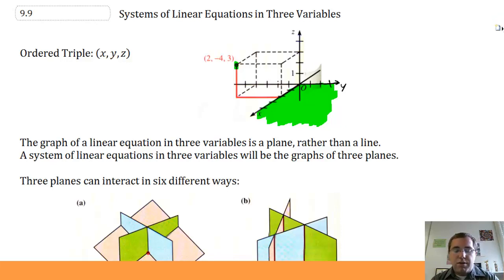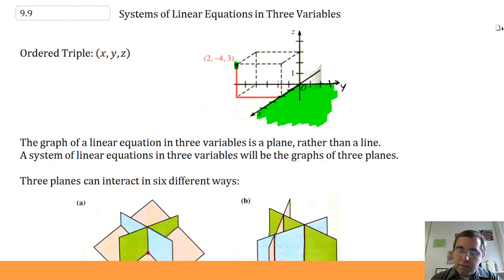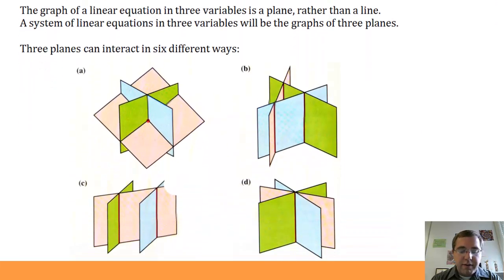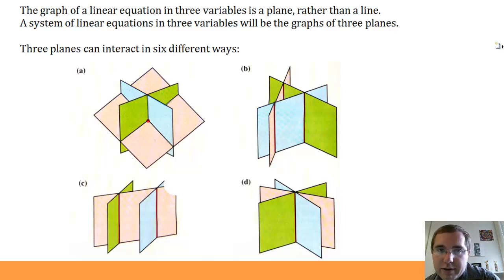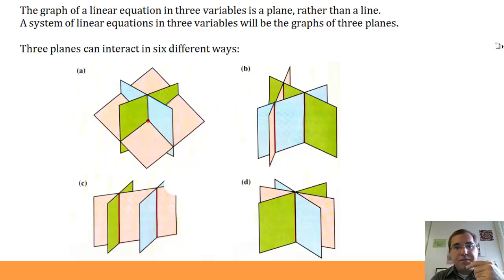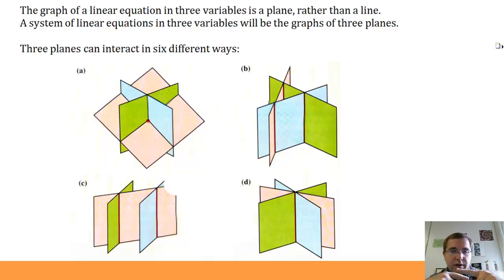The graph of a linear equation in three variables is a plane rather than a line — we end up with a whole, flat, infinitely large surface. A system of linear equations in three variables will be the graphs of three planes, and those three planes can interact in six different ways. Remember when we had two equations with two variables, we had two lines that either intersected in one point, were parallel giving no solutions, or were the same line giving infinitely many solutions.